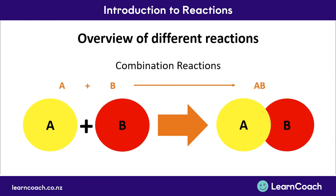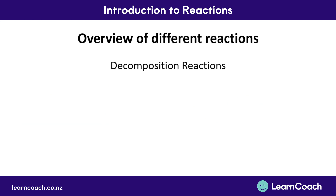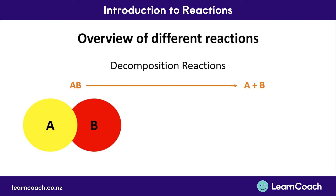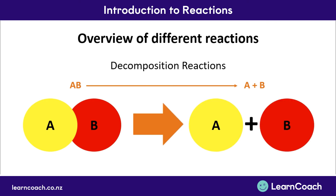The next reaction is decomposition, which is pretty much the opposite of a combination reaction. In a decomposition reaction, a single compound breaks down into more simple compounds or singular elements — for example, compound AB breaking down to become two simpler new elements or compounds.